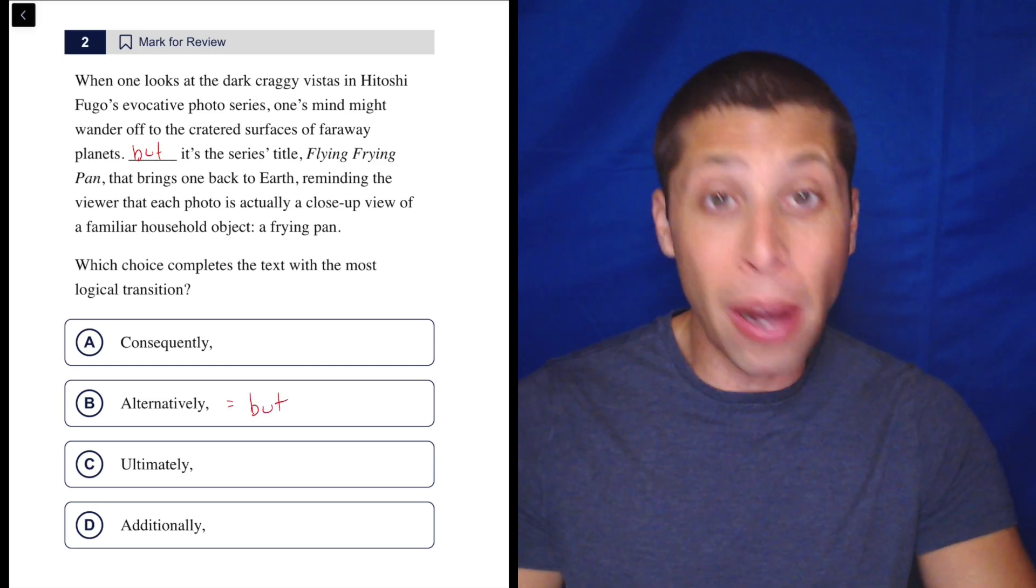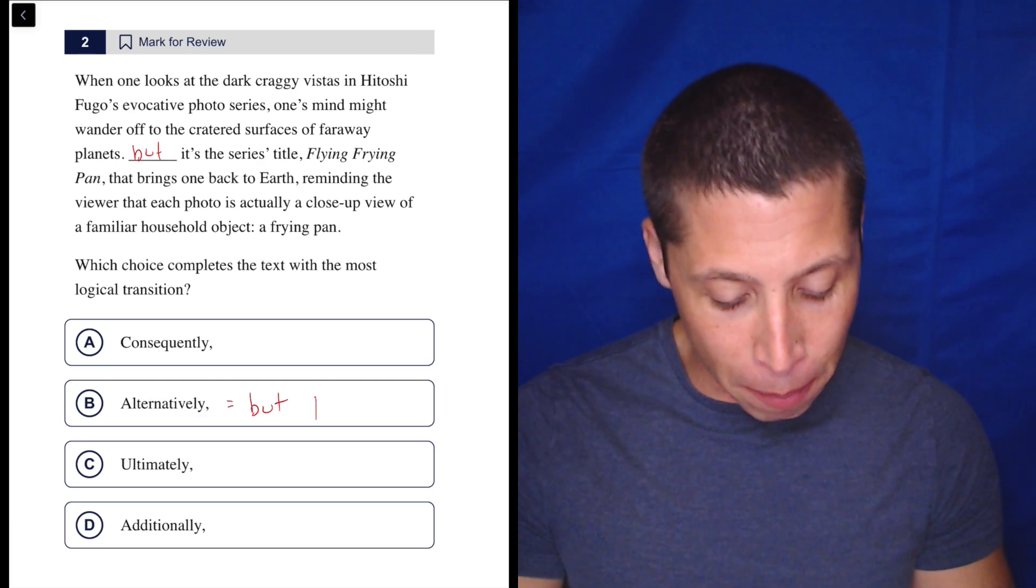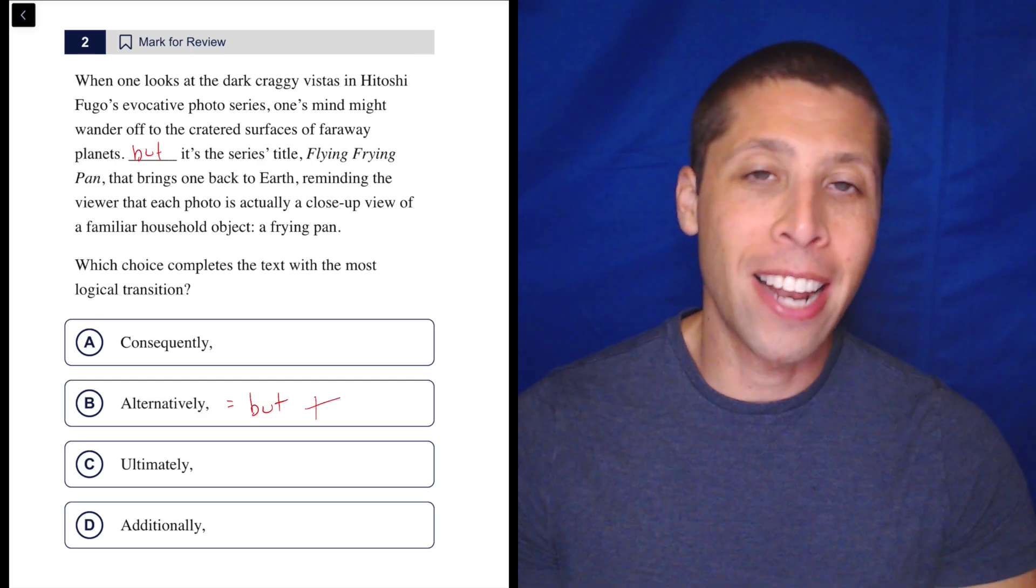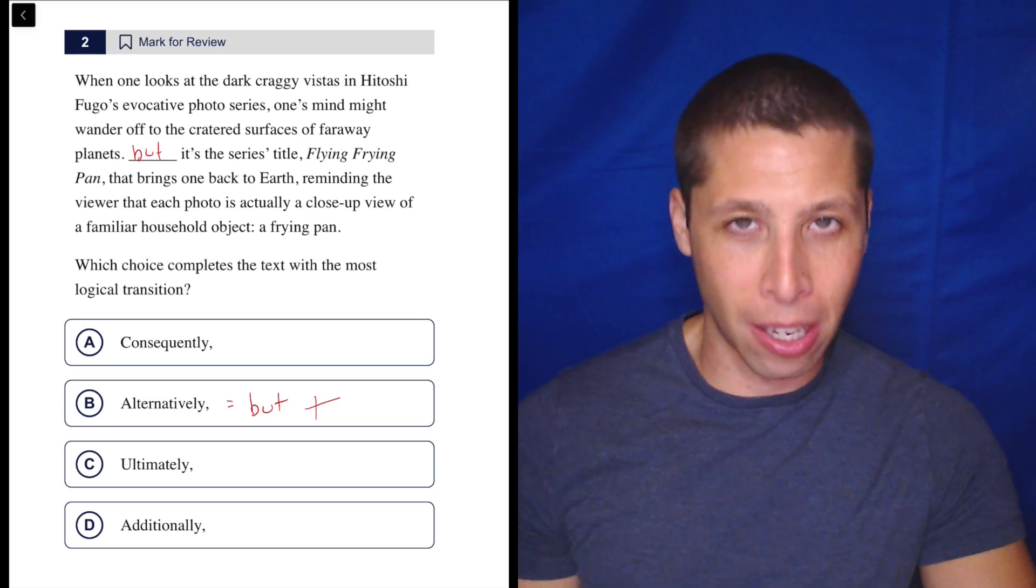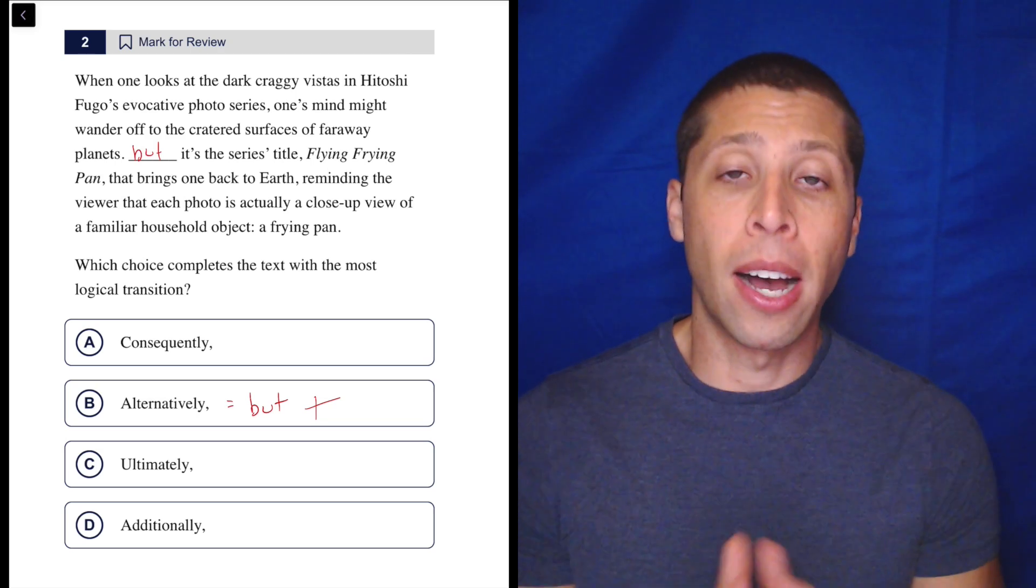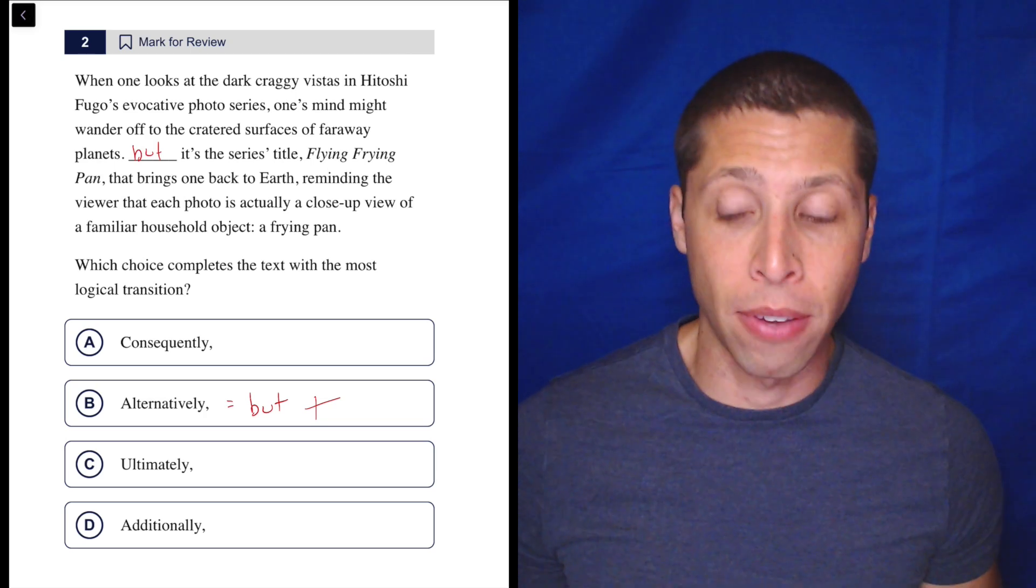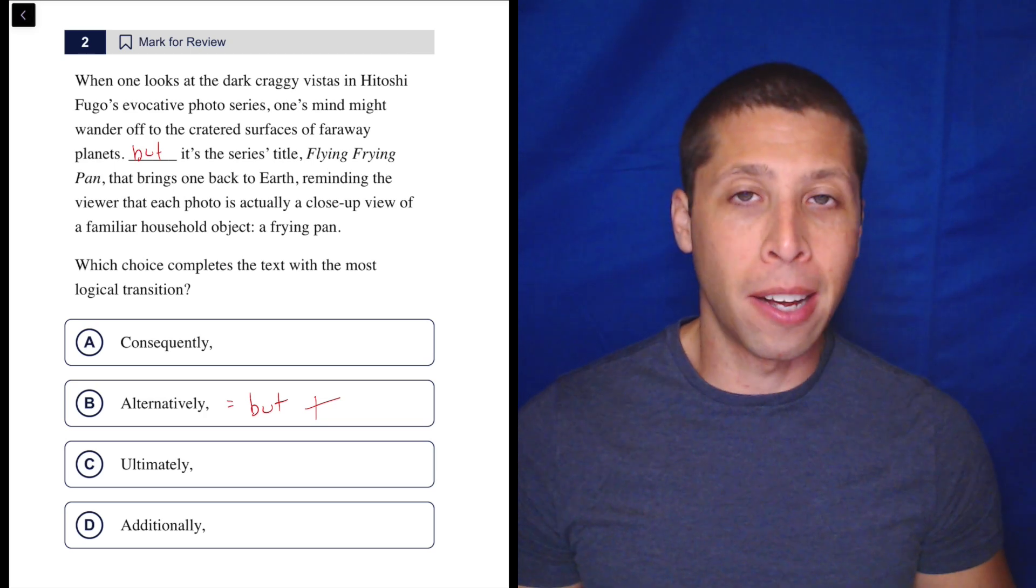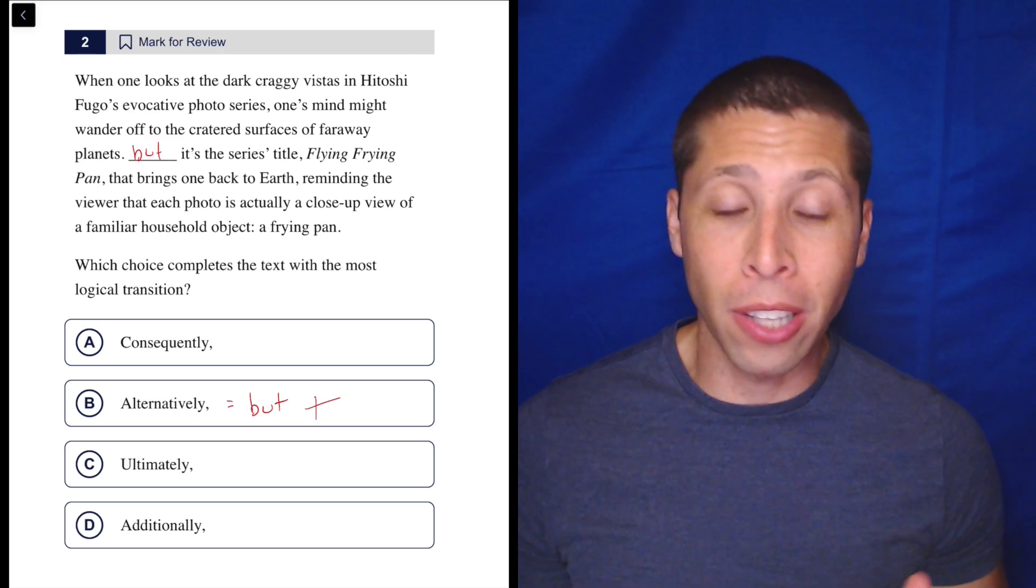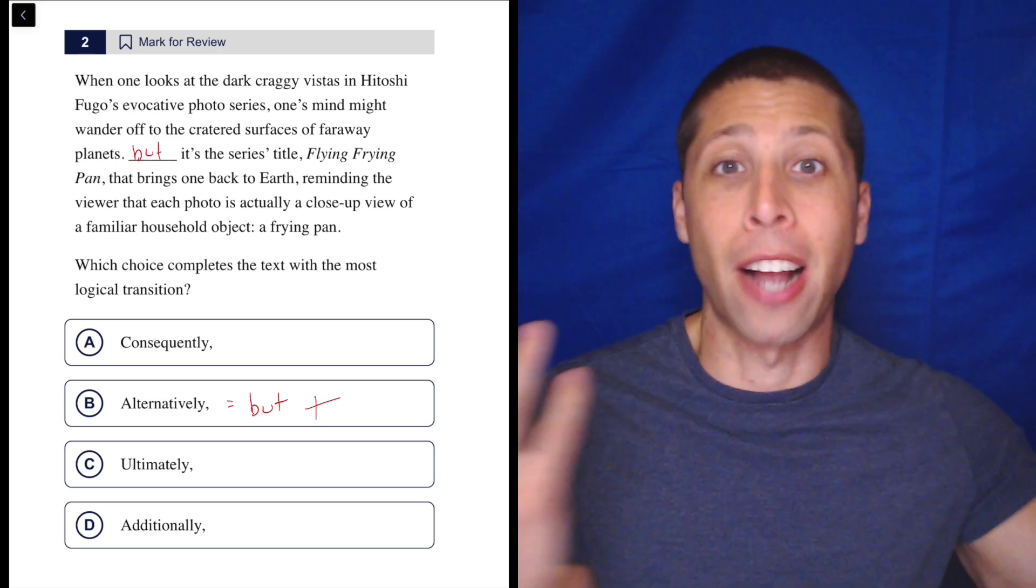Now, alternatively is a but word, but it is not the correct but word. It's a little bit of a but plus here because it has an extra little meaning that we have to pay attention to. Just think of the origin of the word, alternative. An alternative is kind of an alternate path, another choice that we have. So you might say like, I'm going to have a sandwich for lunch. Alternatively, I could have a taco, right?